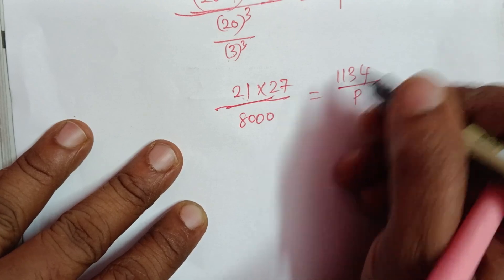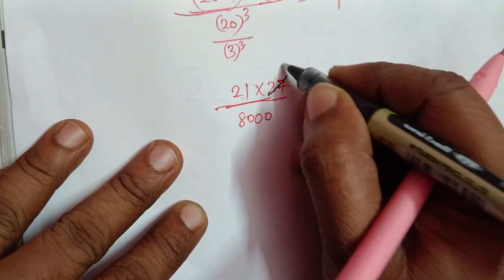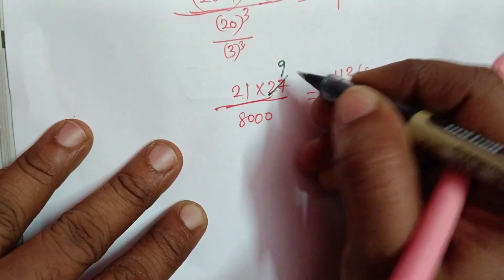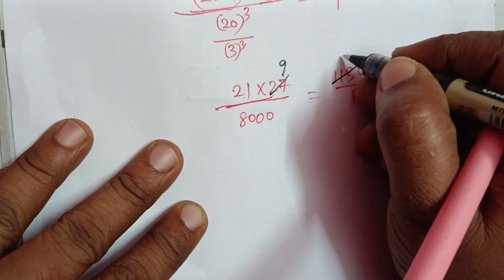So 20 cubed is 8000 and 3 cubed is 27, giving us 21 over 8000 divided by 27, equal to 1134 divided by the principal amount. Now we can cancel using the 3 table: 27 divides to 9, and 1134 becomes 378.